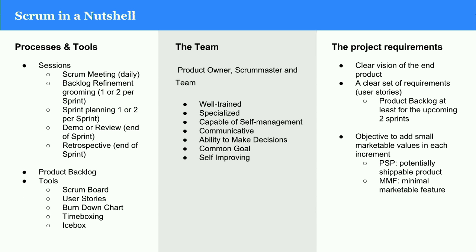Scrum in a nutshell: we have many processes and tools to work through not just the sprint, but all the preparation for the sprints — sprint planning, backlog refining, the demo, and retrospectives to learn and constantly move forward. We have the product backlog and Scrum boards. The team includes the product owner, which is an essential part. Without a product owner, I see Scrum as being problematic. A Scrum master is fairly debatable as required, but the objective is to make that person irrelevant over time.